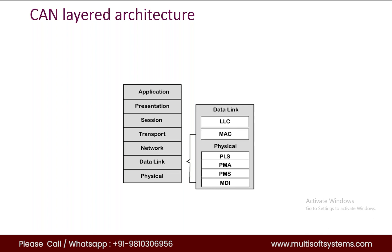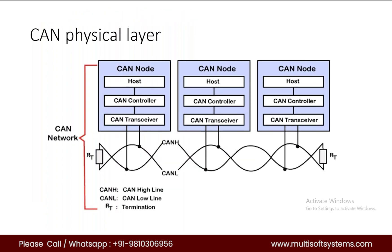The CAN controller and transceiver are implemented in software with the help of application operating systems, network management functions, and more. A CAN network is basically a collection of multiple CAN nodes. In the diagram, there are three CAN nodes: Node A, Node B, and Node C. Each node has three components: a host, a CAN controller, and a transceiver. The host is a microcontroller or microprocessor running an application to perform a specific job.